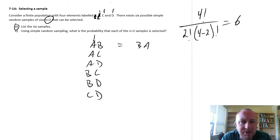So part b, using the simple random sampling method, what is the probability that each of the n equals two samples is selected? So any one sample out of the possible six, so there's a one in six chance, or probability of one-sixth, that any one of these samples will be selected.